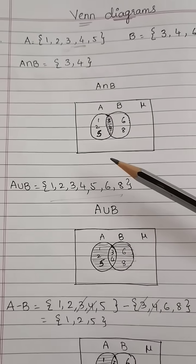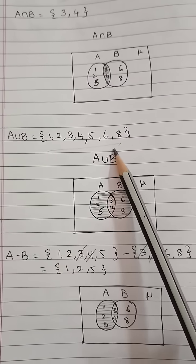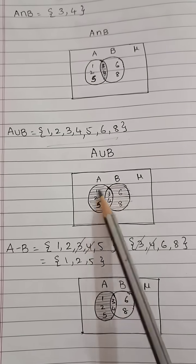For A union B, it's nothing but writing all the terms together. A union B - shade the complete circles.